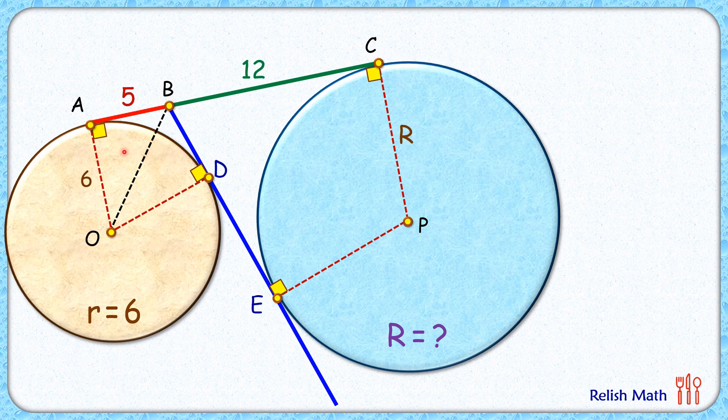These two triangles will be congruent to each other by RHS, and thus these two angles will be equal. Basically, OB will bisect these two angles, so here this angle will also be alpha degrees.